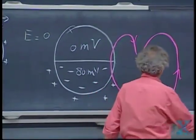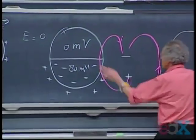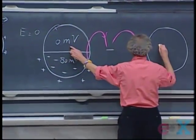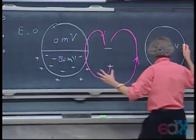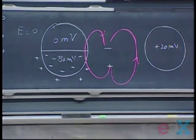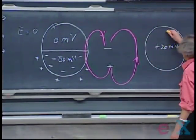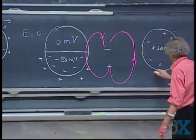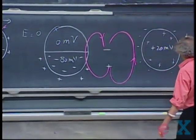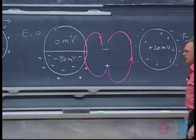A little later in time, when this wave has passed, the whole thing is plus twenty millivolts. So that means that now the inside is plus, so positive ions are now inside, negative ions are outside, and the E-field here is again zero.